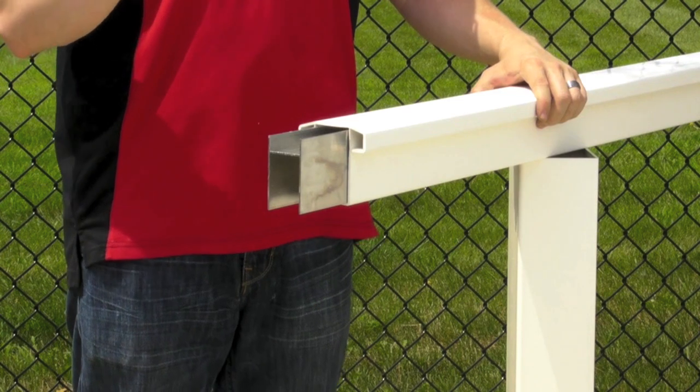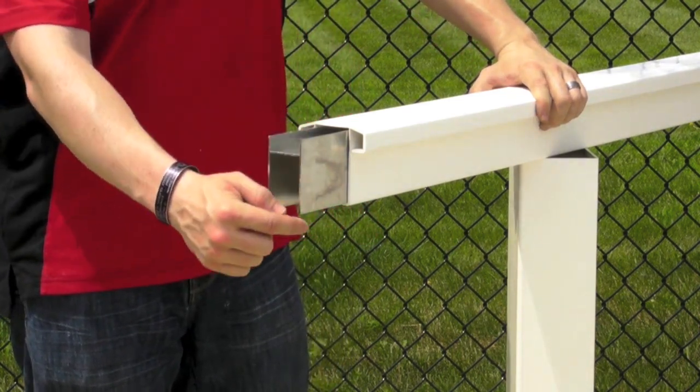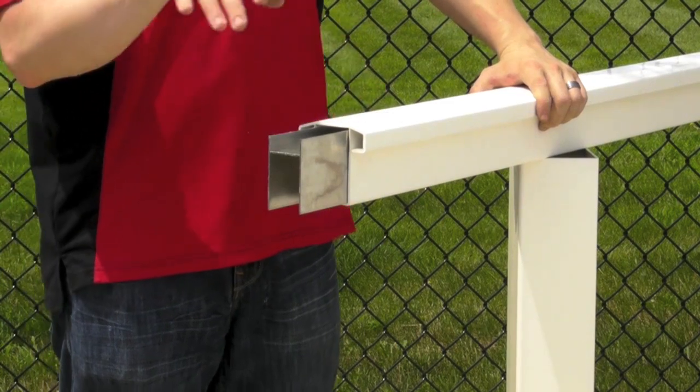You're now ready to assemble your railing section. You'll want to make sure that the large opening on the aluminum for the top rail is facing downward.